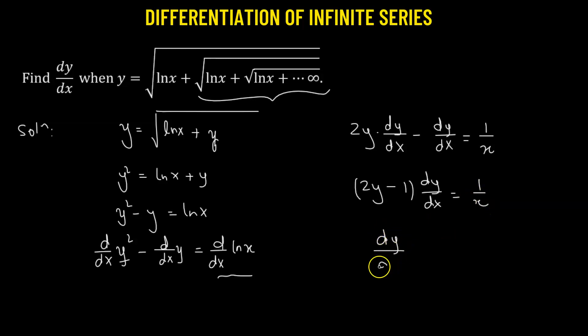So we can get derivative of y with respect to x with the value 1 over x multiplied to 2y minus 1. So this is the value of the required derivative for the infinite series.